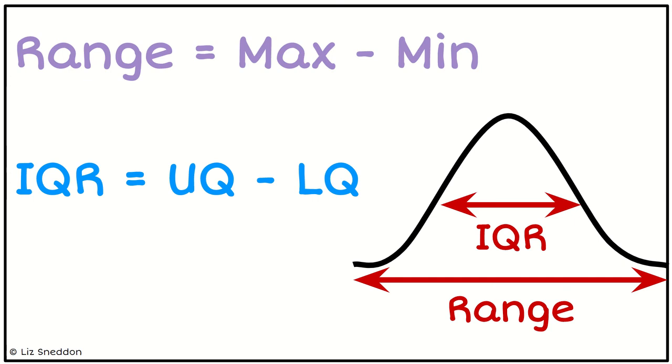The interquartile range is looking at how spread out the middle chunk, or the middle 50% of the data is. So we do our upper quartile, take away our lower quartile.